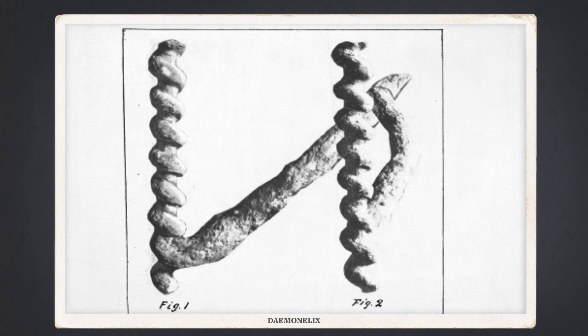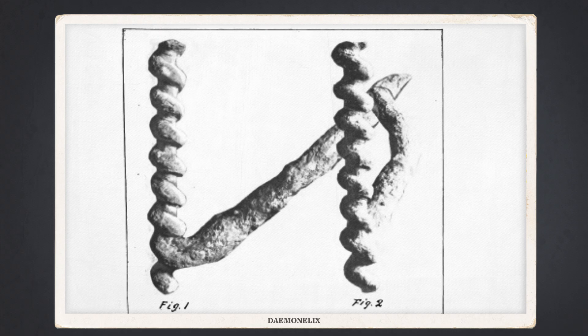Barbour initially thought that these spirals were the remains of vines, roots, or other plant matter that had gotten all tangled up, maybe around a tree trunk that later rotted away. Then he wondered if they might have been sea sponges of some sort. But he also noticed that the corkscrew had this weird feature at the bottom, a little flare that stuck out like a hockey stick.